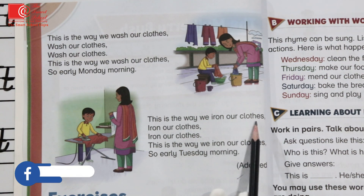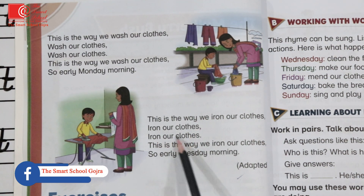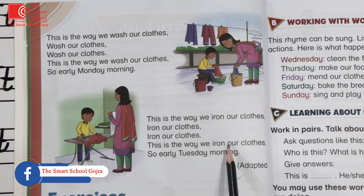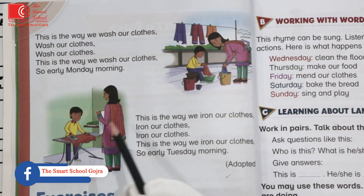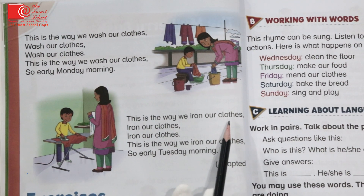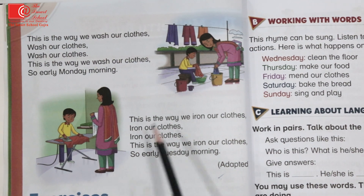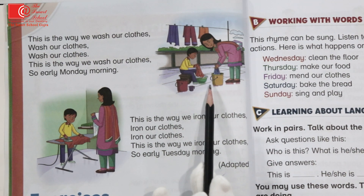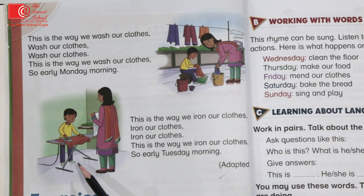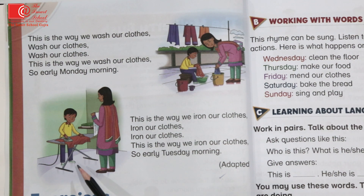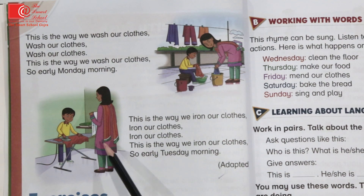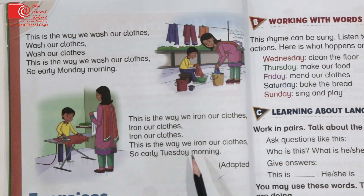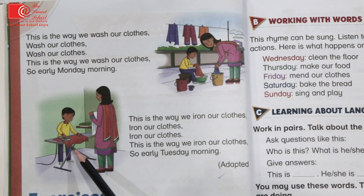This is the way we wash our clothes, this is the way we wash our clothes, so early Tuesday morning. Now they are telling you the way you iron your clothes. There is a picture showing washed clothes, and on the second they are telling you how you iron your clothes. This is the way — early in the morning we do this work quickly, we iron our clothes.